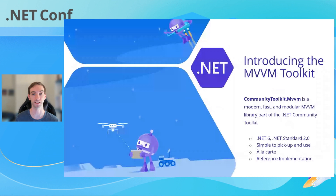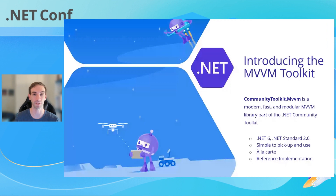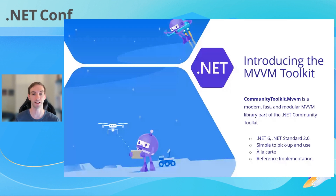The MVVM Toolkit is built around four core principles. First, it multi-targets .NET Standard 2.0 and .NET 6, meaning it can be used from any .NET runtime — from .NET Framework all the way up to .NET 6. When using .NET 6, the toolkit will automatically use some .NET 6-specific optimizations for free. It's also simple to pick up and use, and à la carte — instead of forcing you to structure your entire codebase in a specific way, it exposes basic building blocks you can freely integrate into your project, making it easy to adopt in large existing projects.